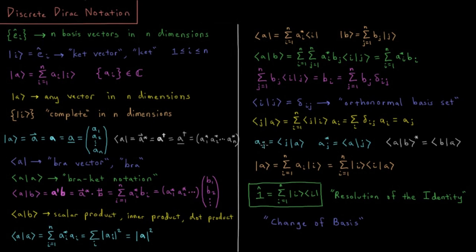So we have a sub j equals bra-ket of j with a, and a_j star equals bra-ket of a with j. We can show that the bracket of a with b is the complex conjugate of the bracket of b with a, because you are swapping which vector carries the complex conjugate when you exchange which is the bra and which is the ket.